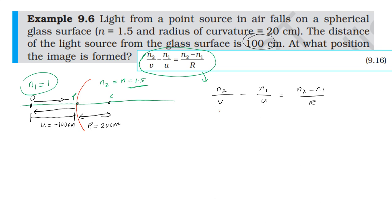So substituting, the equation is: 1.5 divided by v minus 1 divided by minus 100 equals 1.5 minus 1 divided by 20.